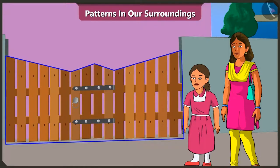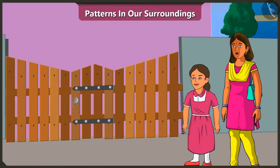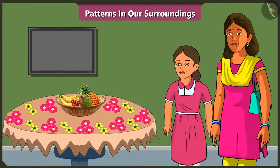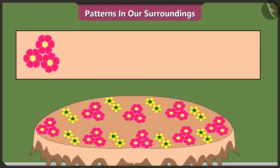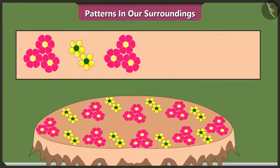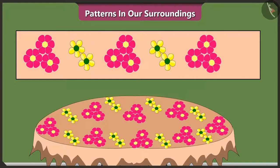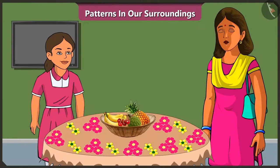Hey, the door of our house also has a pattern. Rightly said Vinny, the strips here have a pattern of big to small, small to big — initially big to small and then small to big strips have been used. Mommy, our table cloth also has a pattern, did you notice? Vinny, what is the pattern of this cloth? It has three flowers, then two flowers, then again three flowers, two flowers, three flowers, two flowers — it gets repeated and that's how this pattern is created. Well done Vinny, very good.